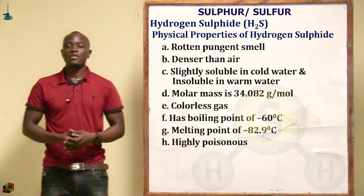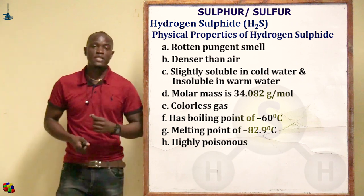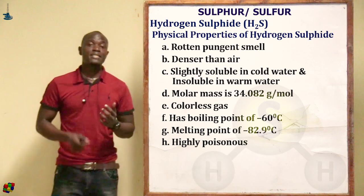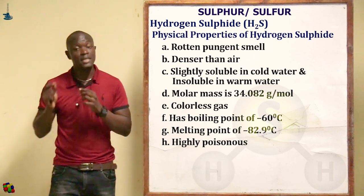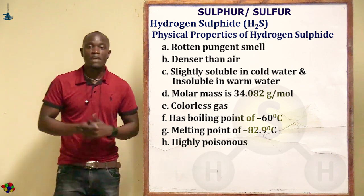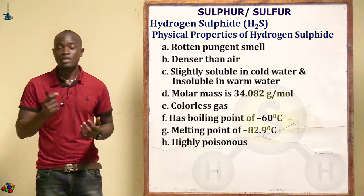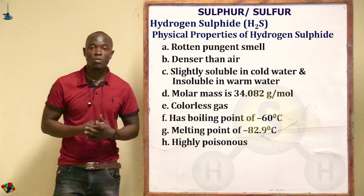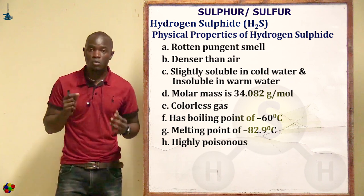The physical properties of hydrogen sulfide: first, it is a colorless gas. Second, it has a rotten pungent smell — the smell of a rotten egg. Third, it is less dense than air, which is why it is collected using the over warm water method.